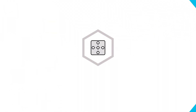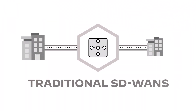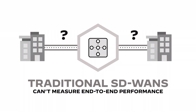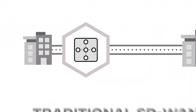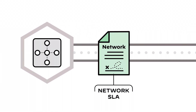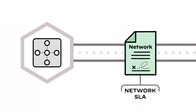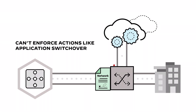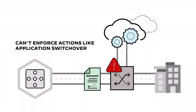It's no secret that traditional SD-WANs can't measure end-to-end performance across the complete life cycle of branch networks. Instead, they focus narrowly on network SLAs and, as a result, can't enforce actions like application switchover to deliver performance for SaaS and cloud applications.